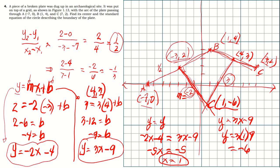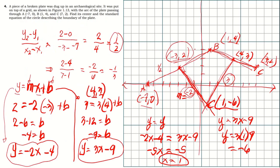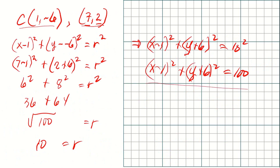Once we had the equations of both perpendicular bisector lines, we found their intersection by comparison — setting y equal to y: negative two x minus four equals three x minus nine, giving x equals one. Using either equation, y equals negative six. So the center is one, negative six. You could also use any of the three given points — negative seven zero, one four, or seven two — to find r equals ten. The standard equation of the circle is x minus one squared plus y plus six squared equals one hundred.